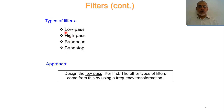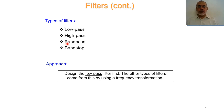In a low-pass filter, the filter passes frequencies from DC up to the cutoff frequency Omega-C. In a high-pass filter, the filter stops frequencies from DC up to the cutoff frequency, and passes the signal at frequencies greater than the cutoff frequency. In a band-pass filter, the filter passes the signal at a specific band from Omega-1 to Omega-2, and stops the signal both before Omega-1 and after Omega-2.